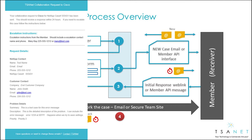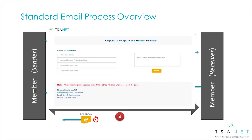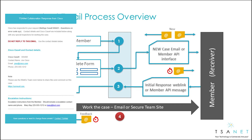First, the sender gets an email that includes SLA and escalation instructions to use if needed. The receiver will receive an email with a button to respond to the case. This takes them to a form where they enter their case number, engineer name, and contact details. This information is then sent back to the sender.